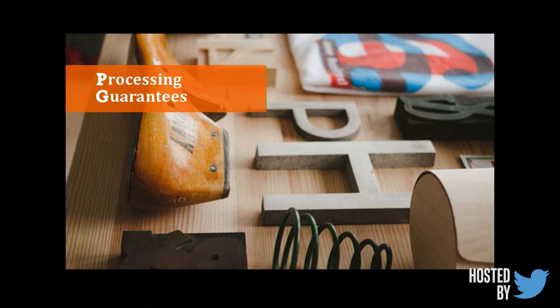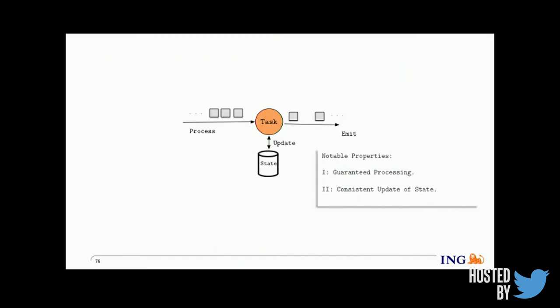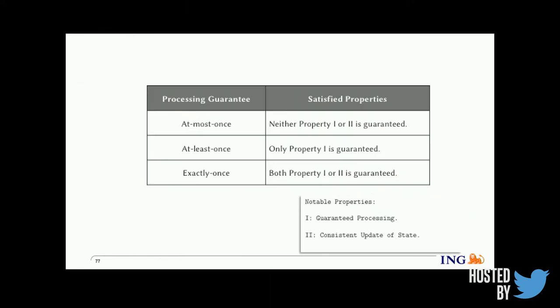A processing guarantee refers to the state of the application upon failure. Execution in a stream processor is modeled as a DAG of tasks interconnected by streams, and the system handles task failures to satisfy one of: at-most-once, at-least-once, or exactly-once. A task processes some input, updates state, and emits output. We derive two properties: guaranteed processing — all input is delivered to the task and fully processed at least once — and consistent update — each input record leads to exactly one update in the state. At-most-once satisfies neither property; at-least-once guarantees only property one; exactly-once requires both properties to be satisfied.